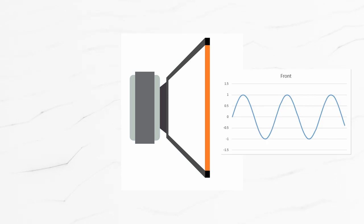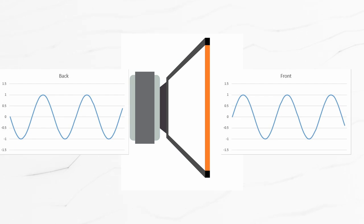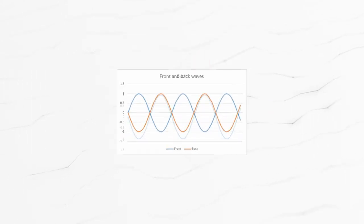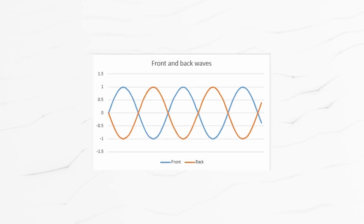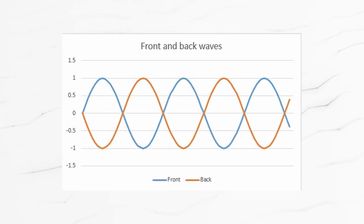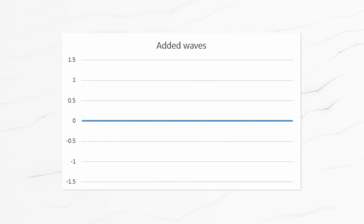However, if you plot the sound from the back of the cone, it has a different start and the sine wave is slightly offset. This creates a problem because if the two sounds meet, they cancel each other out.